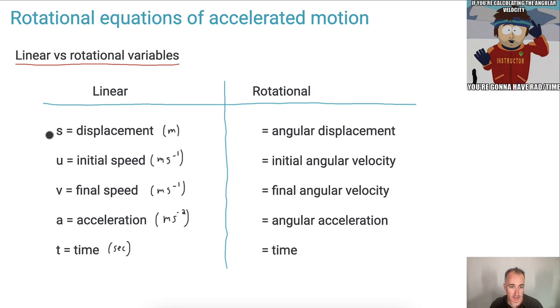So again, in the linear world we had s was displacement in meters. Well now we have delta theta - that's what we use here for angular displacement. And what units do we use here? We use radians, that's why we have this rad over time. Initial speed was u, now we call it omega i. That's the initial angular velocity, and omega f is the final angular velocity. And those then are in this rad time, so these are in radians per second.